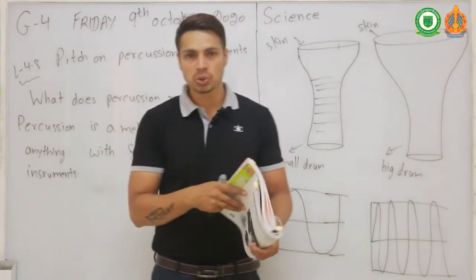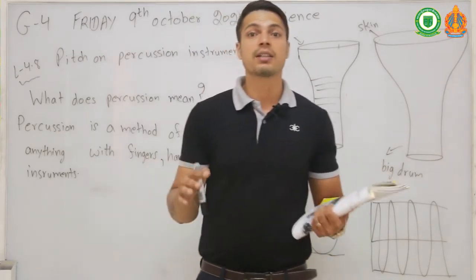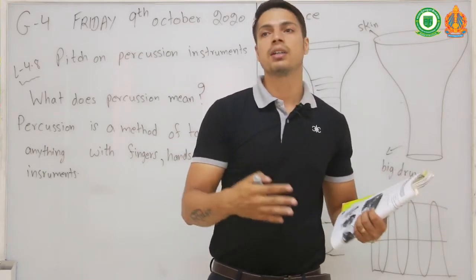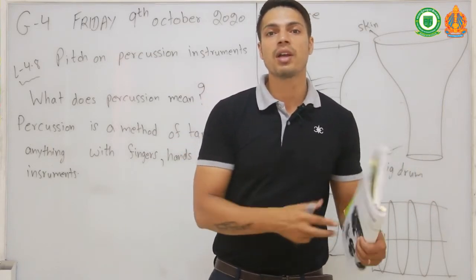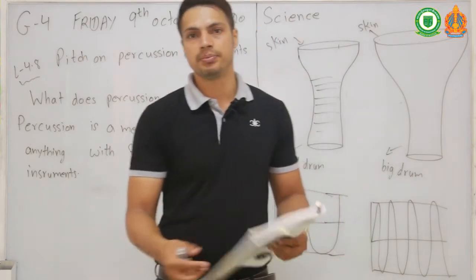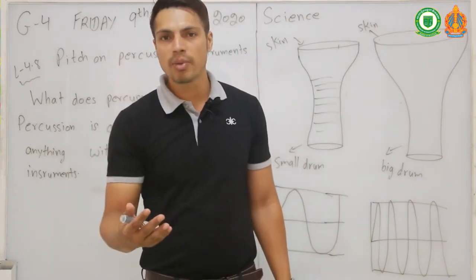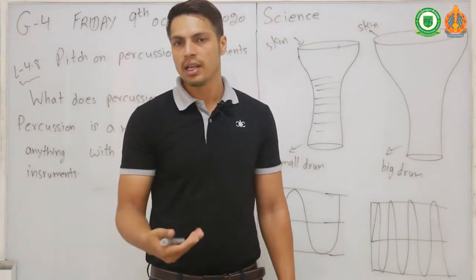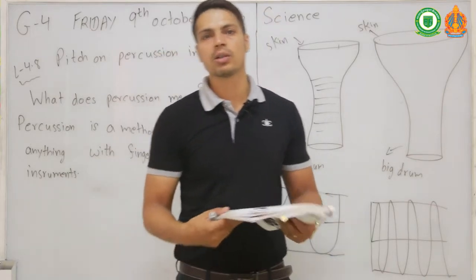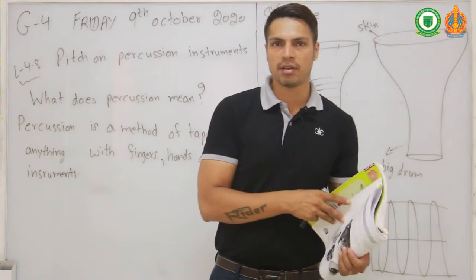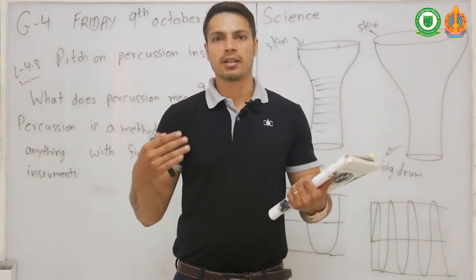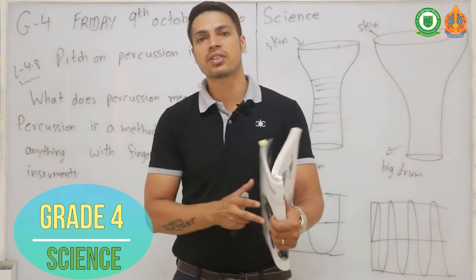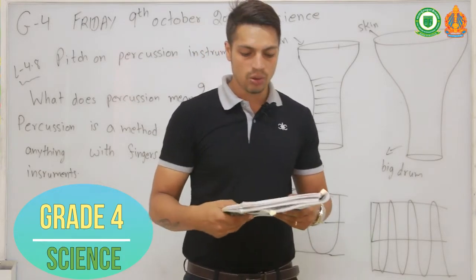That's why most drums have tightly stretched skin on top. You can also adjust it — you can make the skin tight or loose. Most modern drums have a mechanism that lets you tighten or loosen the skin.